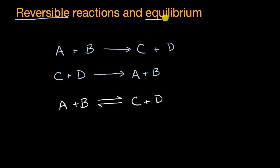At some point, you're going to be hitting an equilibrium. That's the point at which the forward reaction is happening at the same rate as the backward reaction, going from C plus D to A plus B.